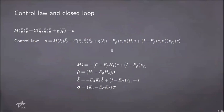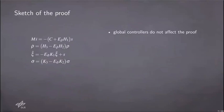And that's because the conditions on the global controllers are not very strict. This is also reflected in the stability proof, from which we can safely remove the presence of the global controllers. Therefore, we will only consider the following simplified closed loop system.